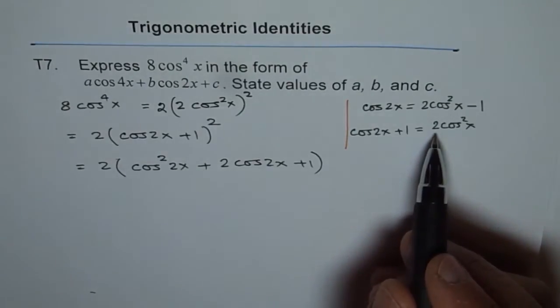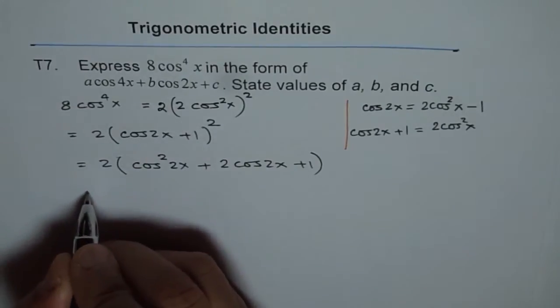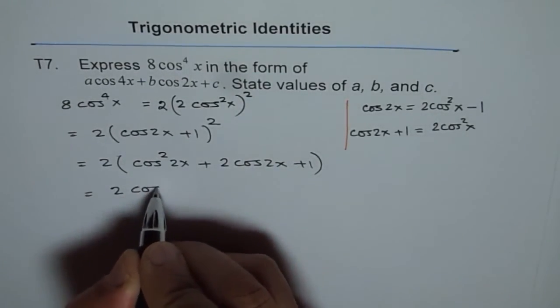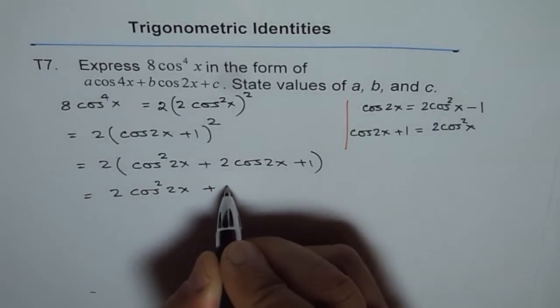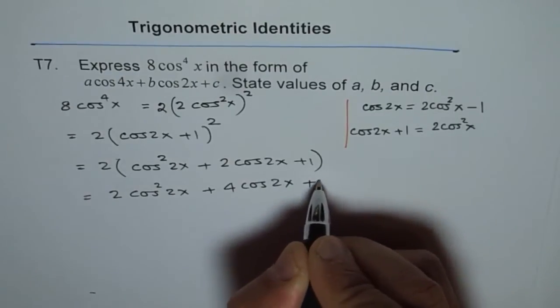Now again we will use the same, 2 cos square x. So we will get 2 like this. We will open the bracket and we get 2 cos square 2x plus 4 cos 2x plus 2.